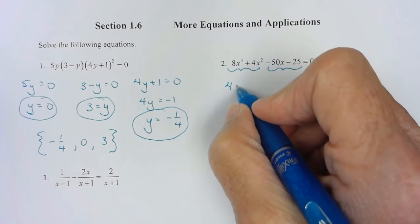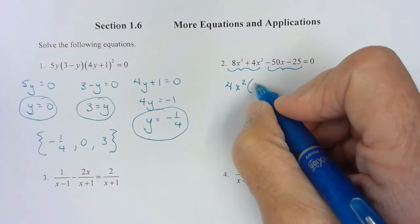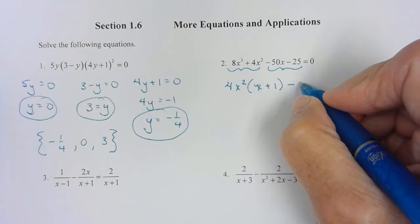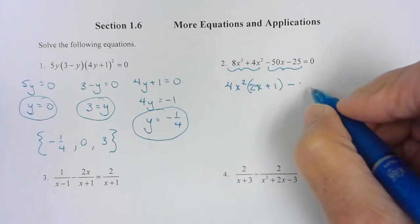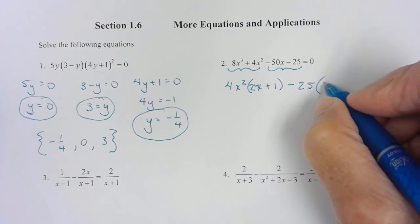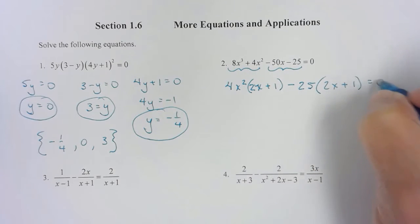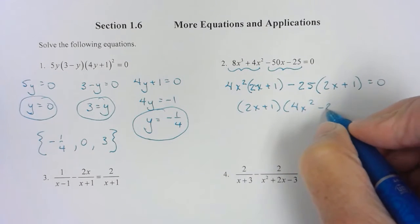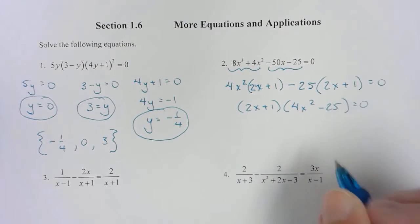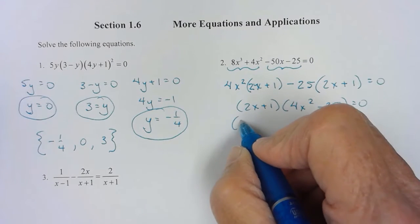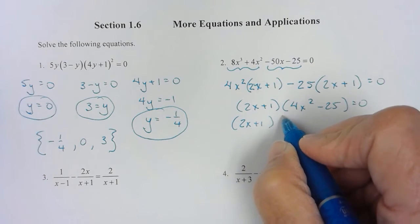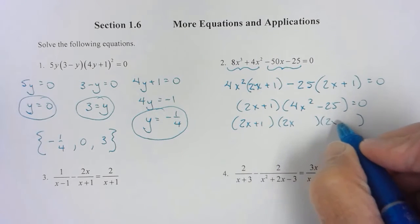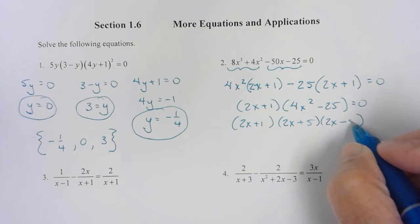So I'm going to factor out a 4x squared, a minus looks like 25. I think I need a 2 there don't I? A minus 25. But notice this is a difference of perfect squares. So there's two ways I could do this one. I'm going to go ahead and factor.